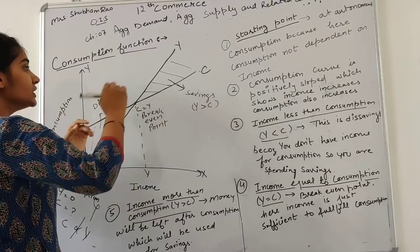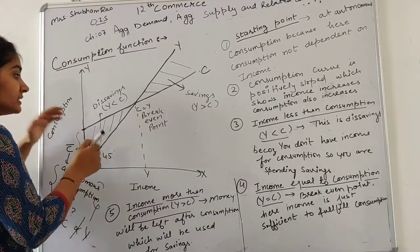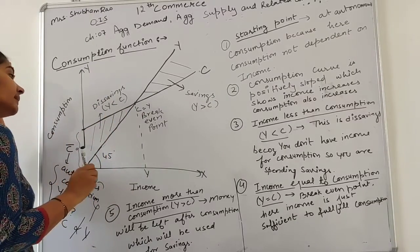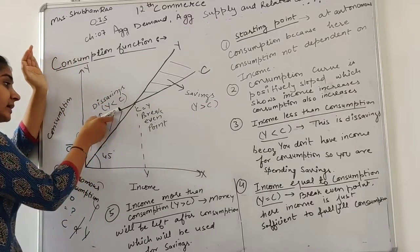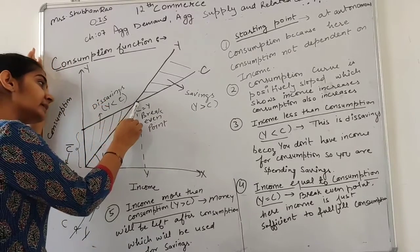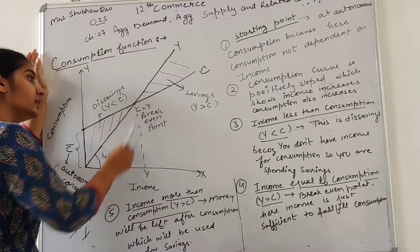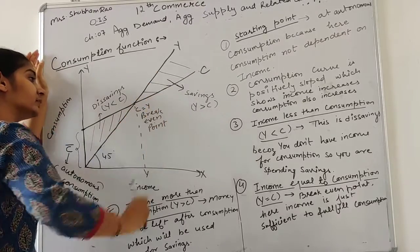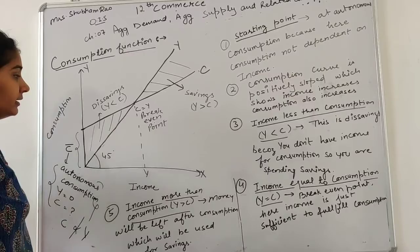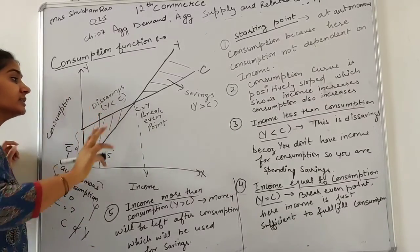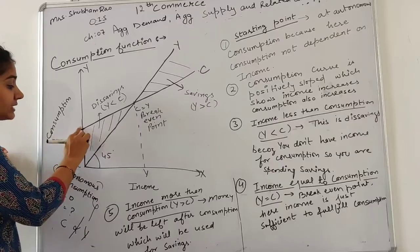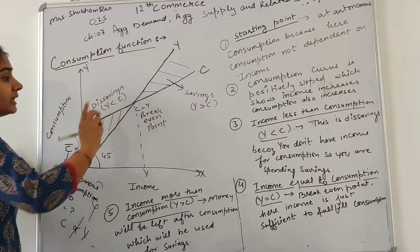Now when we see three situations in this curve, C and Y. The first point: income is low, consumption is more. Here, income and consumption are combined. Here, income is more. What do we see? In the first part, income is less, consumption is more.